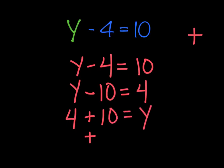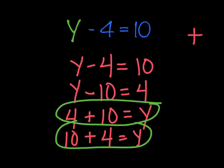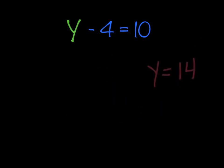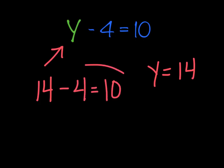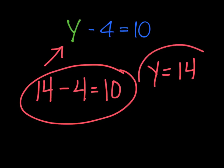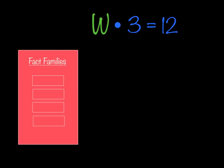The next problem has y minus 4 equals 10. I begin with the first two members of that fact family: y minus 4 equals 10 again. Then I do the other subtraction — when it's subtraction or division, whatever starts here has to stay there — so y minus 10 equals 4. The inverse operation for subtraction is addition, so I have two addition problems: 4 plus 10 equals y, and 10 plus 4 equals y. If I solve either of these, it will get me to my answer: 4 plus 10 equals 14, so y must equal 14.